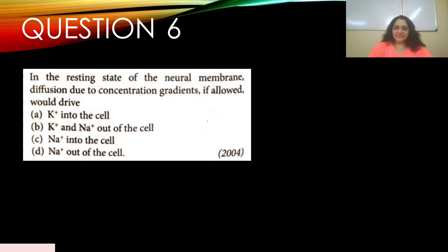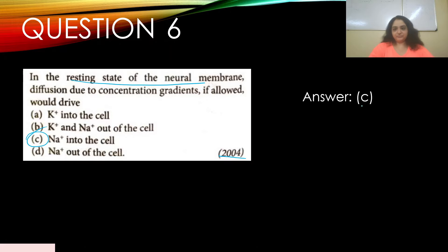Question number six: In the resting state of the neural membrane, diffusion due to concentration gradients if allowed would drive — appeared in 2004. Options: a) potassium into the cell, b) potassium and sodium out of the cell, c) sodium into the cell, d) sodium out of the cell. The answer is c) sodium into the cell.